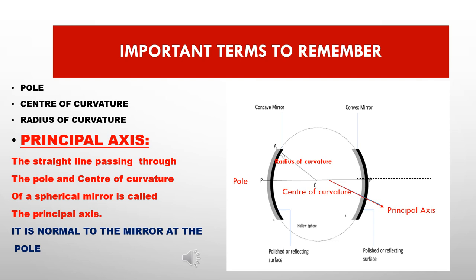Principal Axis: the straight line passing through the Pole and the Center of Curvature of the mirror is called the Principal Axis. It is normal to the mirror at the Pole.